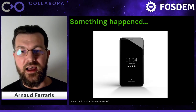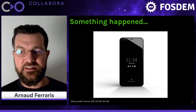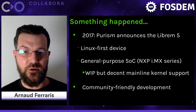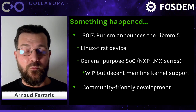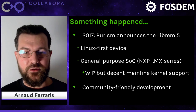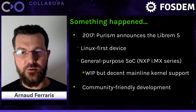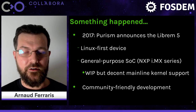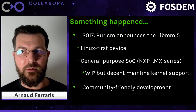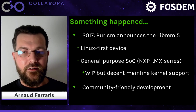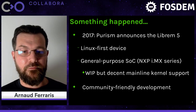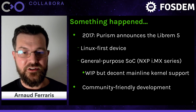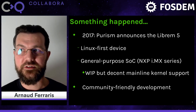In 2017, Purism announced the Librem 5, which was to be a Linux-first device using a general-purpose system-on-chip — one of the NXP IMX series. They envisioned using the IMX 6 initially and finally switched to the IMX 8, which is a 64-bit processor, better for the future. This system-on-chip has pretty good mainline kernel support, so we don't rely on a vendor-only kernel with too many differences from mainline to support long-term.